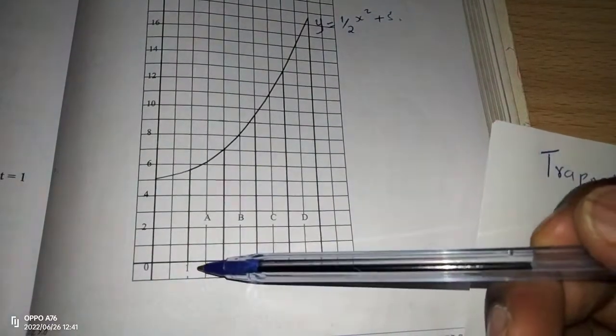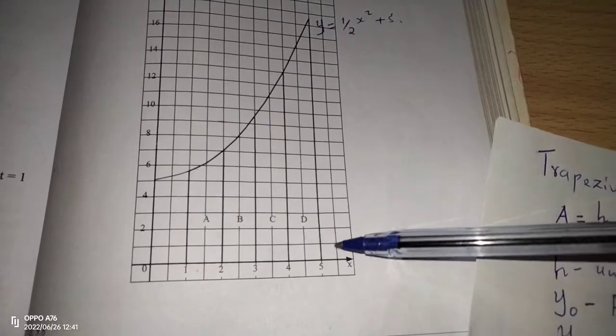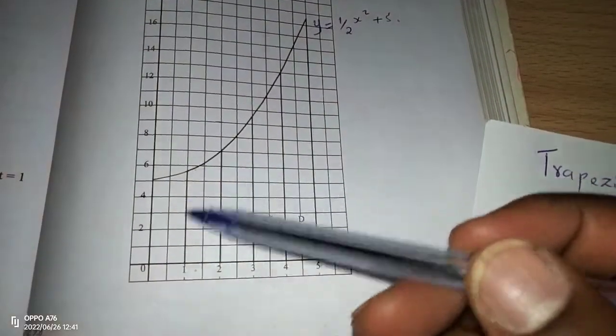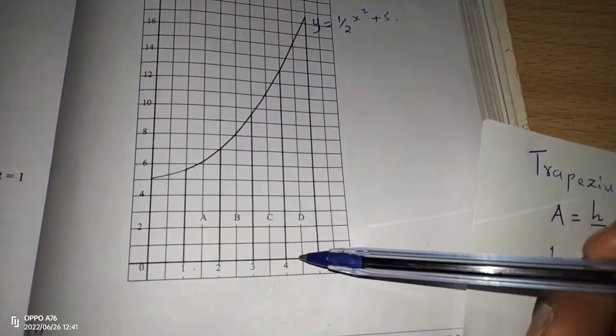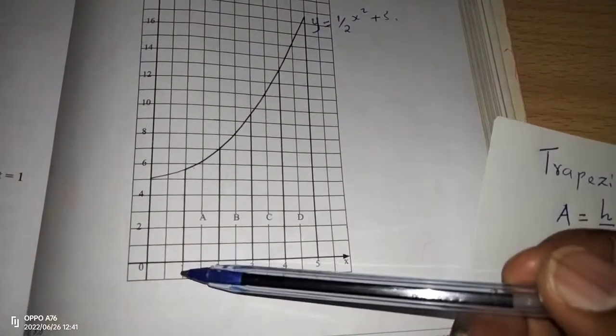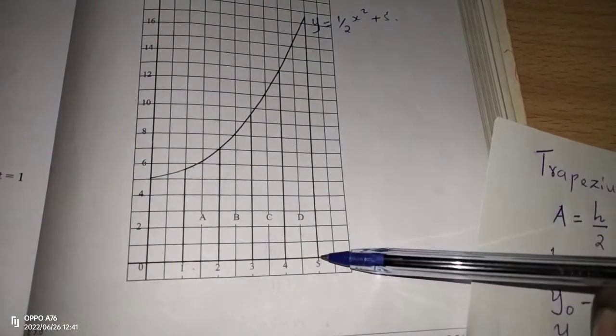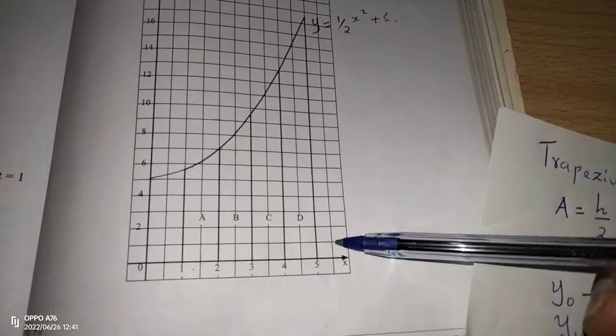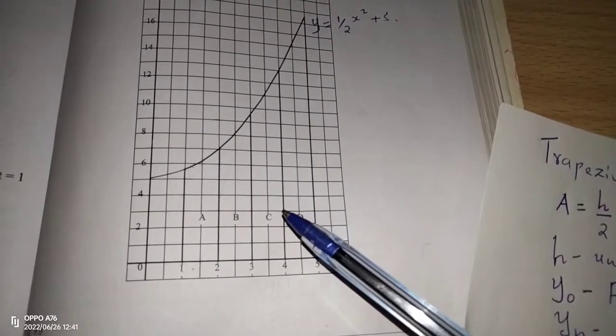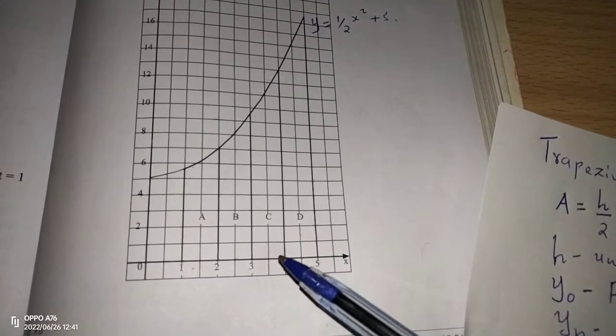Then we have from x equals 1 to x equals 5. So this is now the area below the curve, bounded by this curve, x equals 1, which is this line, and x equals 5, which is this line. So you can see clearly the area we are dealing with.